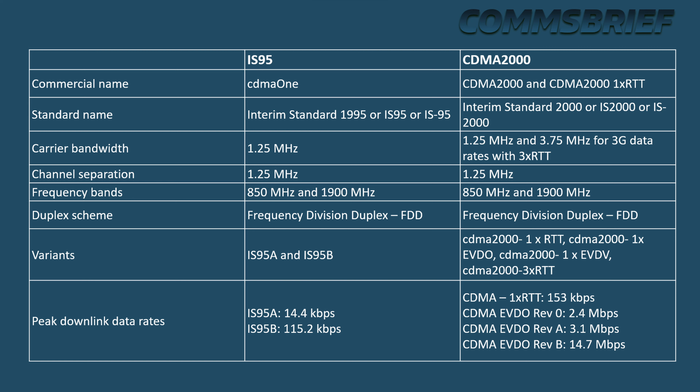The technology standard that defines CDMA 2000 is IS2000, Interim Standard 2000, just like CDMA 1 is IS95. IS2000 was introduced in the year 2000, whereas IS95, as the name suggests, was introduced in 1995. CDMA 2000 is backwards compatible with its predecessor IS95, making the upgrade from IS95 to CDMA 2000 easy and seamless.